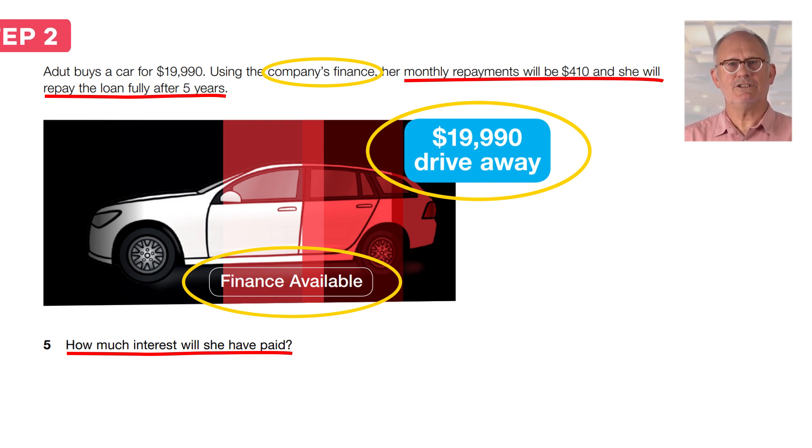Now read the question again and think about what maths you will need to do to solve the problem. First you need to find out how much she actually paid in total, which will be for five years times the 12 months per year for the total number of months. Then you need to multiply that by the $410 per month. Then finally you need to take the actual cost of the car, the $19,990, away from what she paid.